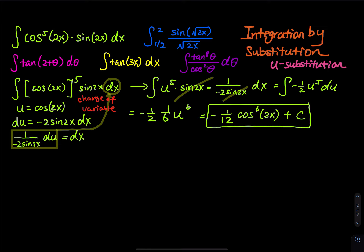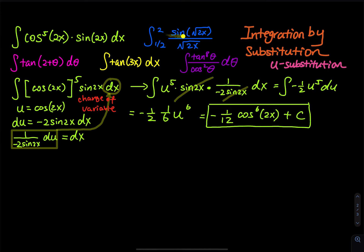That is the final answer for the first problem. Now let's look at the blue integral, which is a definite integral: the integral of sine of root 2x divided by square root of 2x. If you let u equal the numerator, nice try, but that won't help. The correct choice is to let u equal the square root of 2x — usually you let u equal what is inside a radical or parenthesis.